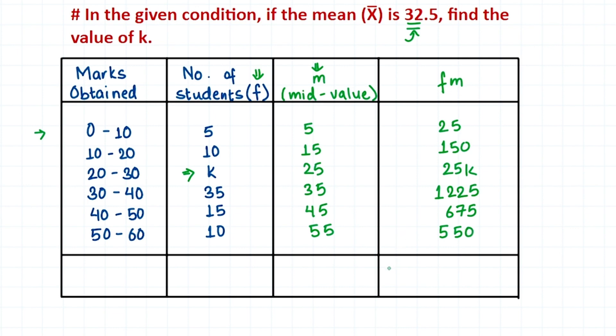When we add all these numbers, we get the summation of fm, which is 2625 plus 25k. We can't add the 25k with the other numbers because it contains k, so we add the numerical values to get 2625, then add 25k.